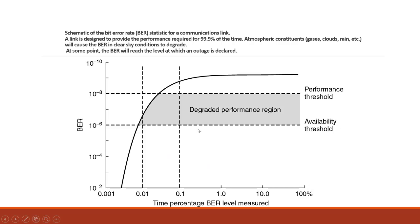If the BER goes between 10 to the power of minus 6 and 10 to the power of minus 8, the signal is in the degraded performance region — you can still receive the signal but performance is degraded. Above this threshold it is beyond acceptable, and an outage is declared. The link should remain in the acceptable region for 99.9% of the time; only 0.1% margin is allowed for degraded or outage conditions.